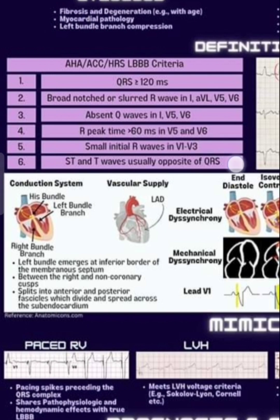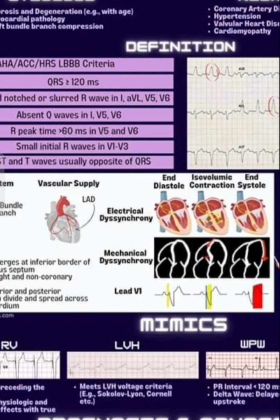ST and T waves are usually opposite to the QRS direction. The conduction system includes the His bundle, left bundle, and right bundle branch. The left bundle emerges at the inferior border of the membranous septum between the right and non-coronary cusps, splitting into anterior and posterior fascicles which divide and spread across the subendocardium. Vascular supply is from the LAD. This results in electrical dyssynchrony and end-diastolic asynchronous contraction.